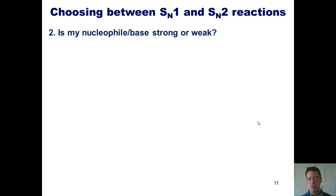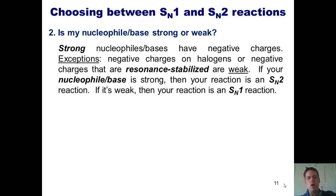This brings us to question number two: Is my nucleophile strong or weak? Now you might be wondering, what in the world does that mean? Strong nucleophiles have negative charges. The exceptions are negative charges on halogens or negative charges that are resonance stabilized. Those negative charges are weak. If you have a nucleophile that's strong, then your reaction will be an SN2 reaction. If it's weak, then your reaction will be an SN1 reaction.